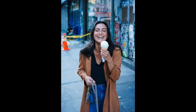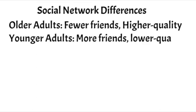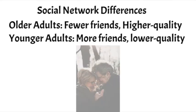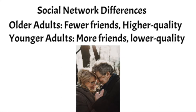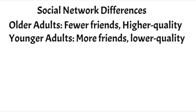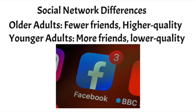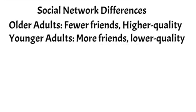Older adults have social network differences. They tend to have fewer friends, but those friends tend to be a lot more close to them — more emotionally meaningful — and they have deeper conversations with them. Whereas younger adults tend to have a wider circle of friends, such as all the people you work with or go to school with. Younger adults tend to have more people, but the quality of their relationships doesn't tend to be as high.